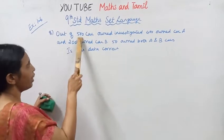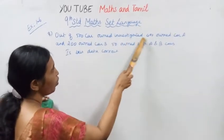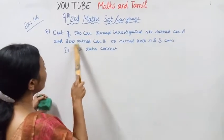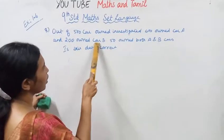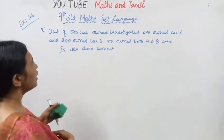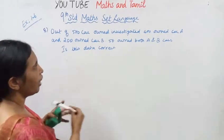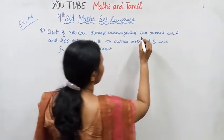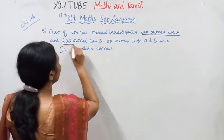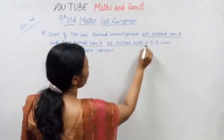Out of 500 cars investigated, 400 owned Car A and 200 owned Car B. 50 owned both Car A and Car B. Is this data correct?